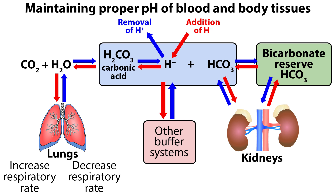The lungs control certain amounts of carbon dioxide in the blood. If the lungs are not functioning properly, CO2 builds up, causing increased carbonic acid, which affects blood pH and leads to acidosis. The main function of the kidneys is retaining or excreting bicarbonate, or HCO3, which is what neutralizes the excess acid in the blood.